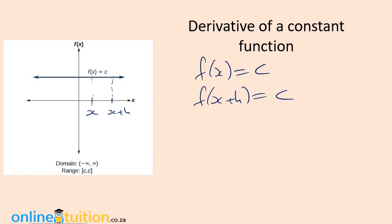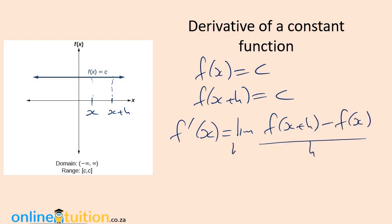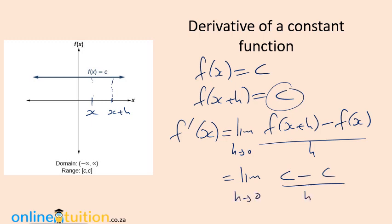Always write down the full formula — I've probably said this a billion times. Learn to write mathematics. So this is: limit as h tends to zero of [f(x+h) minus f(x)] all over h. f(x+h) is c, minus f(x) which is c, all over h as h tends to zero — not equal to zero. Hence, as expected, the answer is zero. The derivative of a constant function is zero. We already knew that.